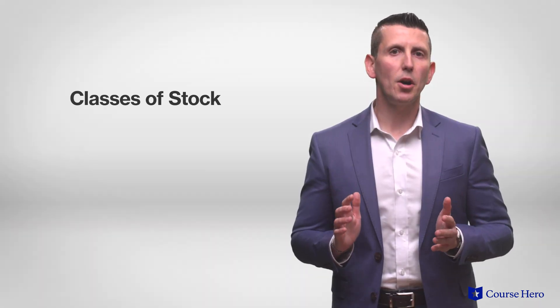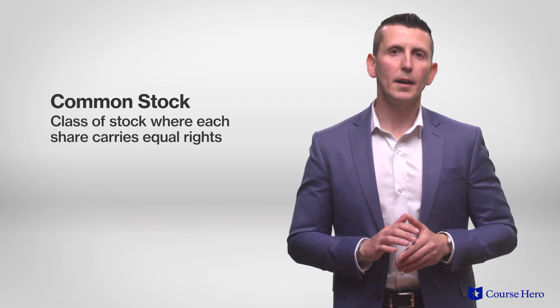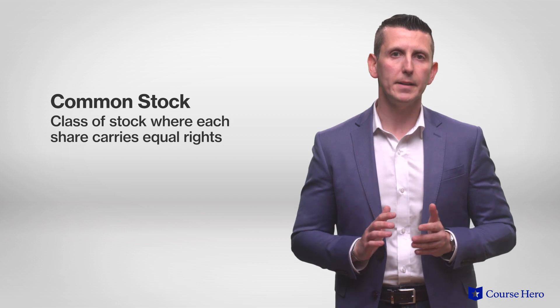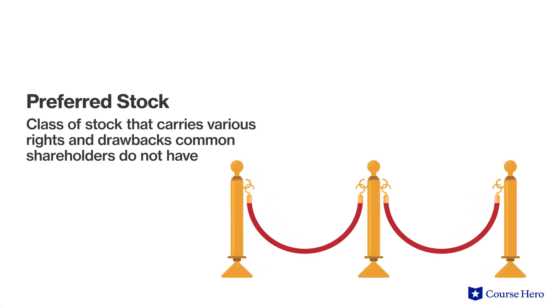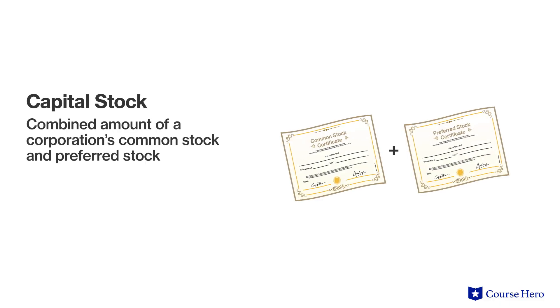There are two main classes of stock: common stock and preferred stock. Common stock is a class of stock where each share carries equal rights. Preferred stock is a class of stock that carries various rights common shareholders do not have, but it also has drawbacks. A corporation could also simply have one class of stock, in which case it is common stock — common stock is the default stock class. Capital stock is the total amount of a corporation's common stock and preferred stock combined.